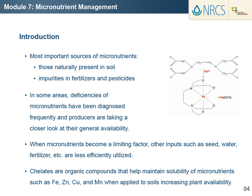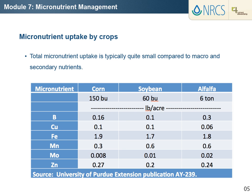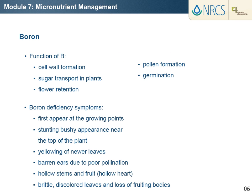There are some important organic compounds called chelates that help maintain solubility of micronutrients such as iron, zinc, copper, and manganese when applied to soils and therefore increase plant availability. The total amount of micronutrients absorbed by plants is typically quite small compared to macro and secondary nutrients. This table lists the amount of each micronutrient except chloride taken up by several crops.